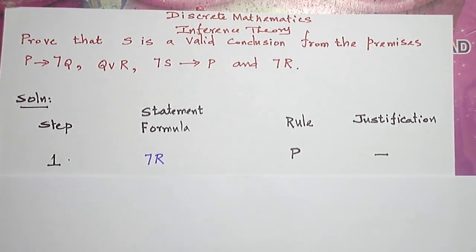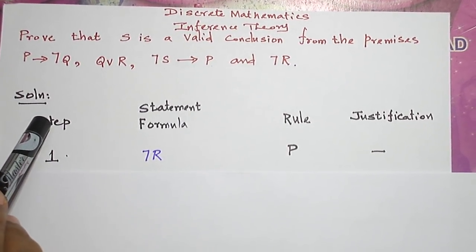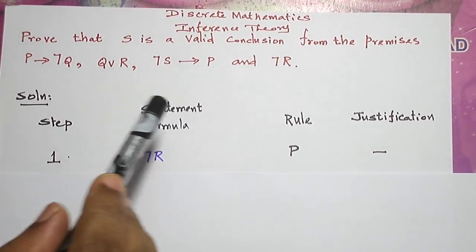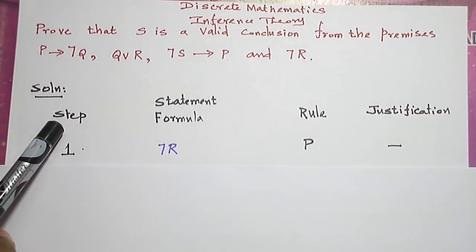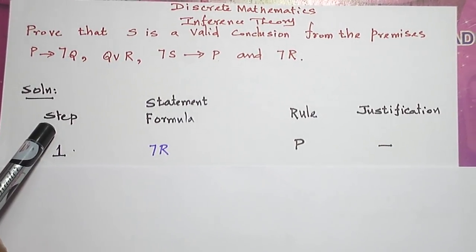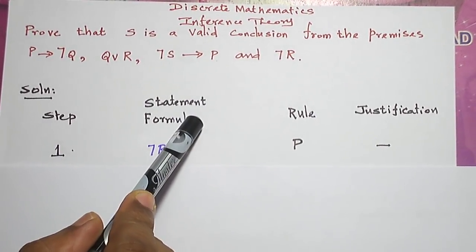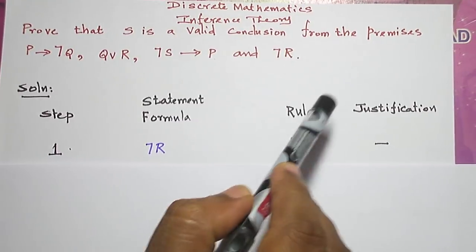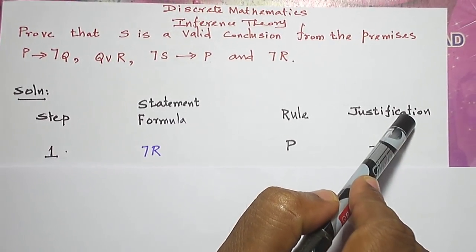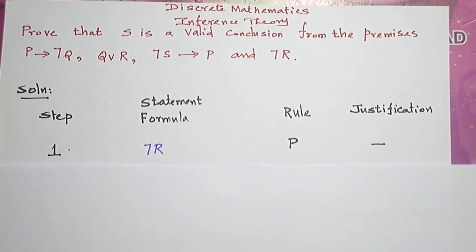To start with the problem, I am going to form four columns: the first column for the step, the second column for the statement formula, the third column for the rule, and the fourth column for the justification.